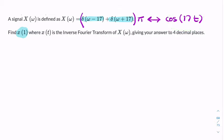You're given that in the table, but it's something you need to know - that a cosine corresponds to two impulses, plus and minus 17 radians per second.